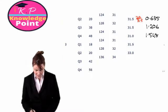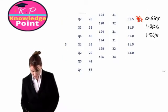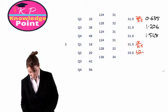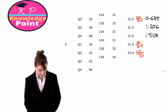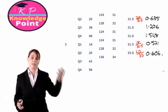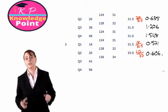And our last two: quarter one of year three will be 18 divided by 31.5, and quarter two will be 20 divided by 33, giving us seasonal variations of 0.571 and 0.606. Once we know our equation — seasonal variation equals actuals divided by trend — the calculations are straightforward.